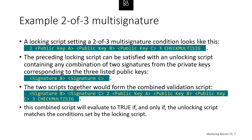That locking script can be satisfied with an unlocking script containing any combination of the minimum threshold signatures from the private keys — in this case, two digital signatures corresponding to some combination of the three public keys. For example, signature B and signature C would satisfy and unlock the funds. The two scripts together form a combined validation script: the unlocking script (signature B, signature C) followed by the locking script (2, public key A, public key B, public key C, 3, OP_CHECKMULTISIG). This combined script evaluates to true if and only if the unlocking script matches the conditions set by the locking script.